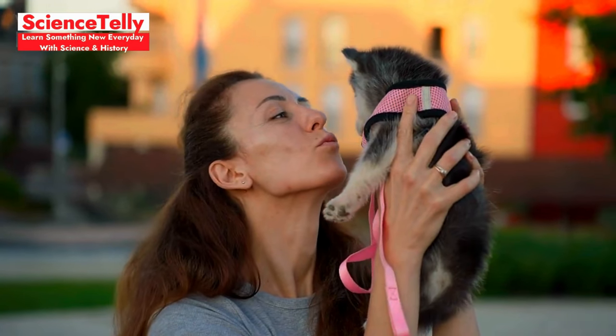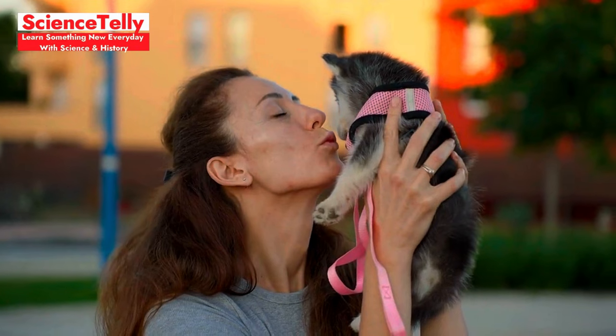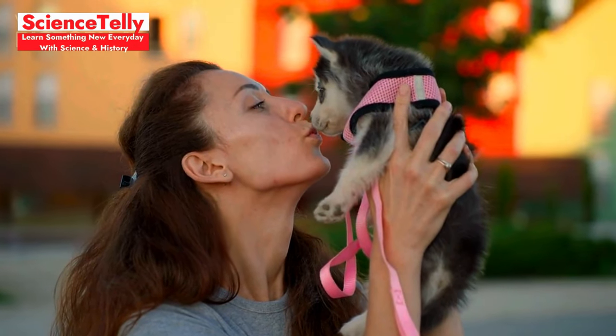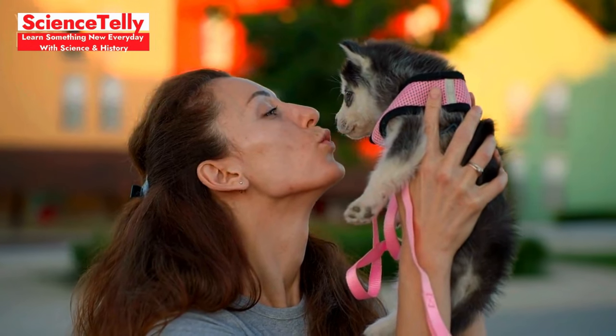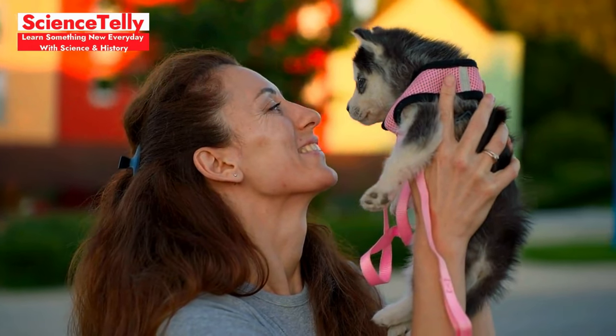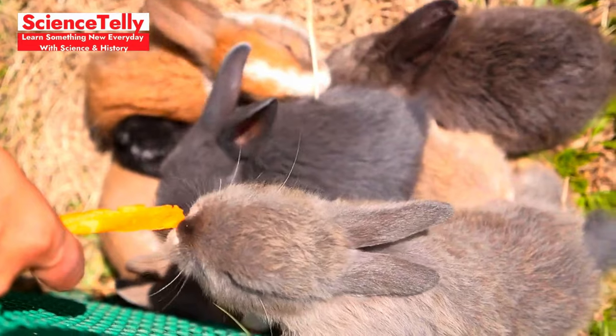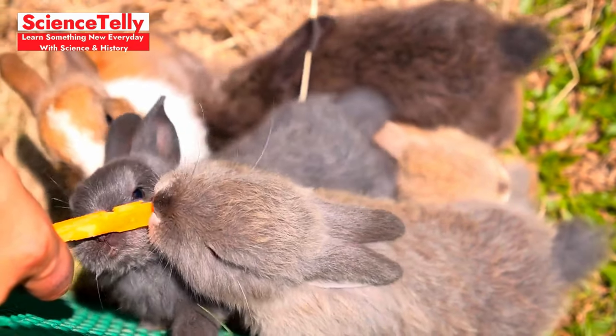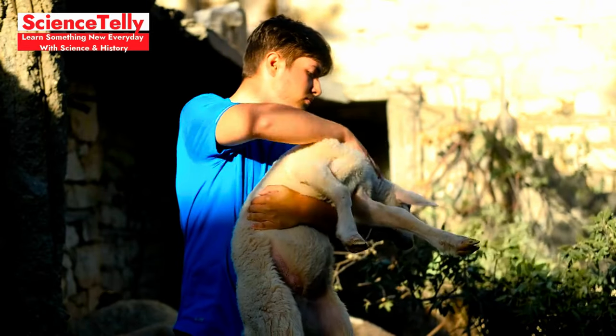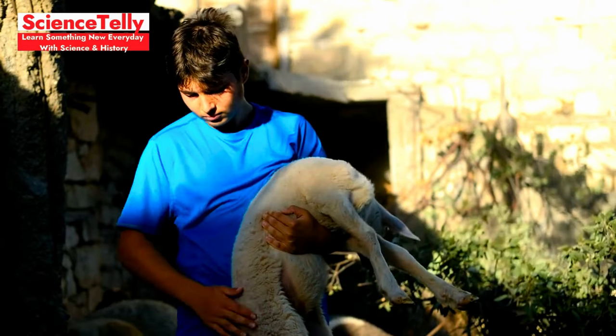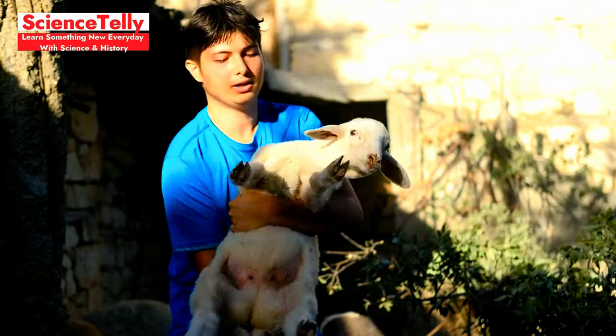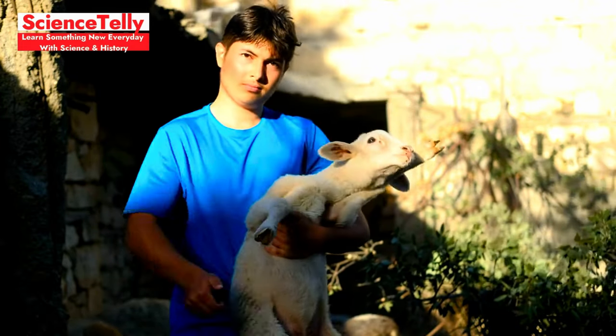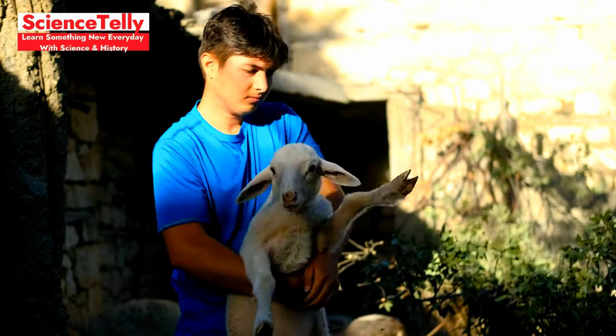While animal love might not be identical to human emotions, since our feelings are shaped by complex social and cultural factors, it's evident that many animals can form connections resembling our concept of affection. These bonds may manifest through behaviors such as nurturing, play, and protective actions. Overall, while we may not fully understand the depths of animal emotions, the evidence points to the idea that many species experience love and attachment in their unique ways, enriching their social lives just as it does for us.